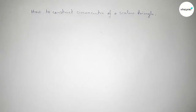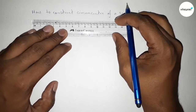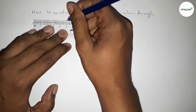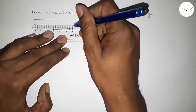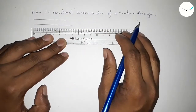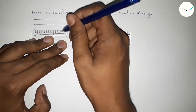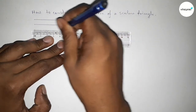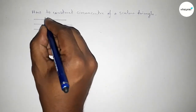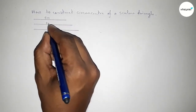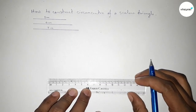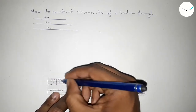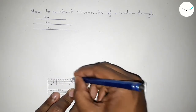First of all, we have to draw a scalene triangle using a compass. We'll take three sides: first a line of length five centimeters, then six centimeters, and the third line is seven centimeters. So this side is five centimeters, this side six centimeters, and this side seven centimeters. Now first we draw the line of seven centimeters.